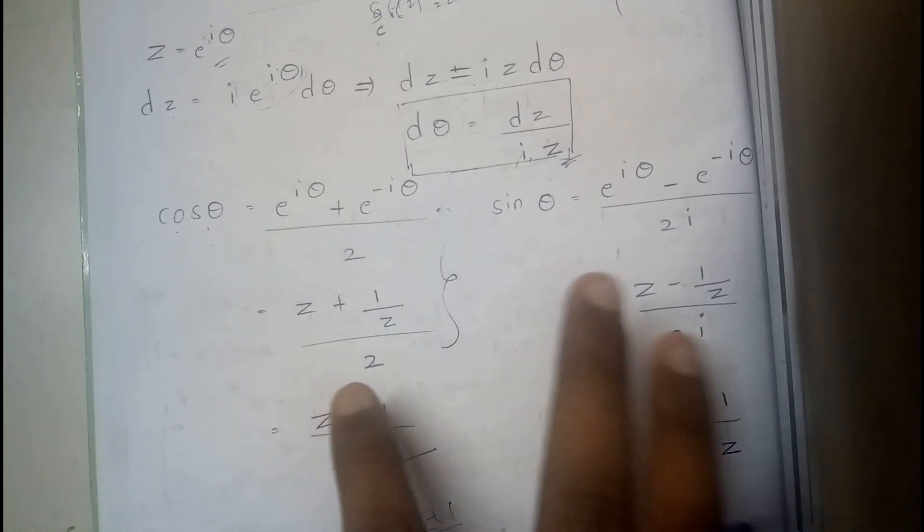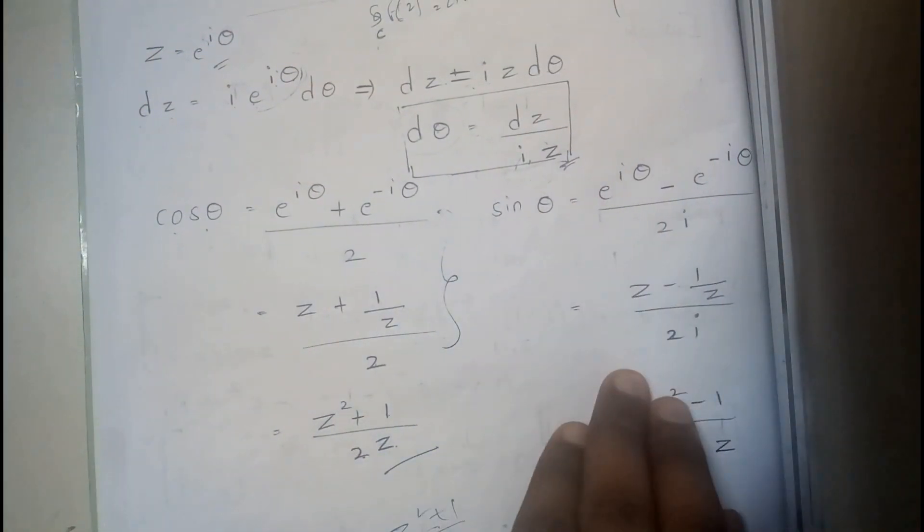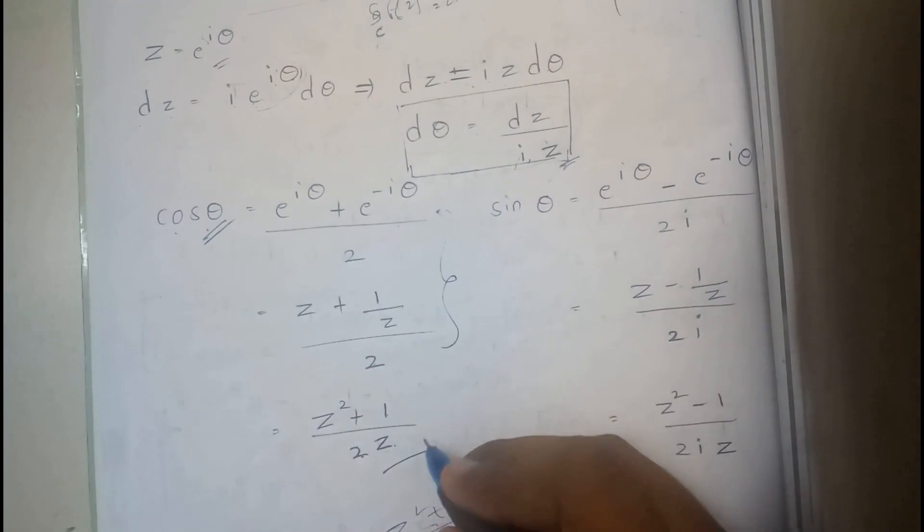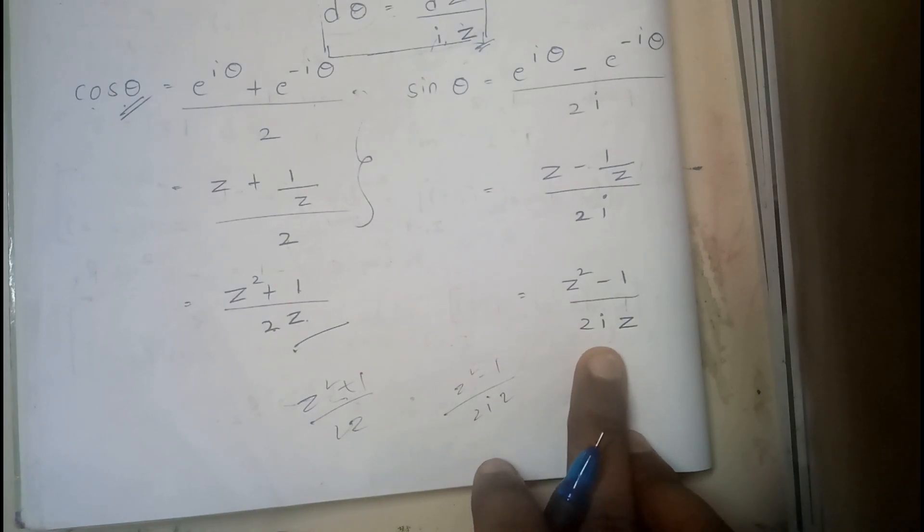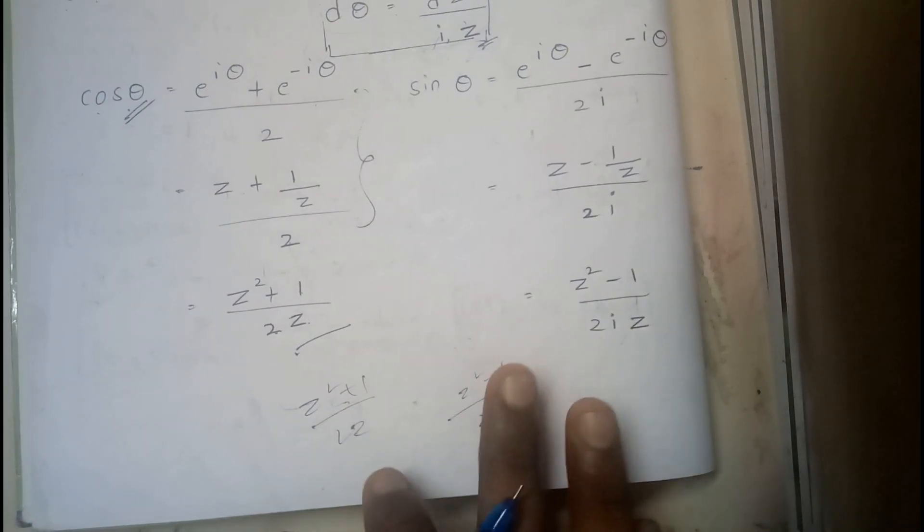And we are having two formulas: one is for sine and one is for cos. So cos(θ) we will be replacing by (z² + 1)/(2z), and sin(θ) we will be replacing by (z² - 1)/(2iz).